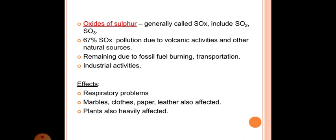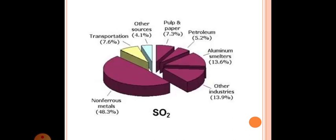Oxides of sulfur: Generally called SOx. Include SO2, SO3. 67% SOx pollution due to volcanic activities and other natural sources. Remaining due to fossil fuel burning, transportation, industrial activities. Effects are respiratory problems. Marbles, clothes, paper, leather also affected, and plants also heavily affected. Transportation 7.6%, Other sources 4.1%, Pulp and paper 7.3%, Petroleum 5.2%, Aluminum smelters 13.6%, Other industries 13.9%, Non-ferrous metals 48.3%. SO2 as shown in the figure.